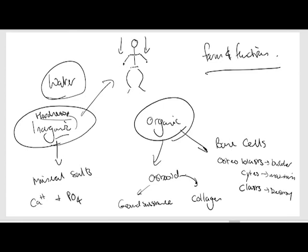The osteocytes are basically bone maintenance cells. We've got bone builders, bone maintainers, and bone destroyers. On the osteoid side, we've got ground substance and possibly most importantly collagen fibers. Your job is to remember what each of those things is.